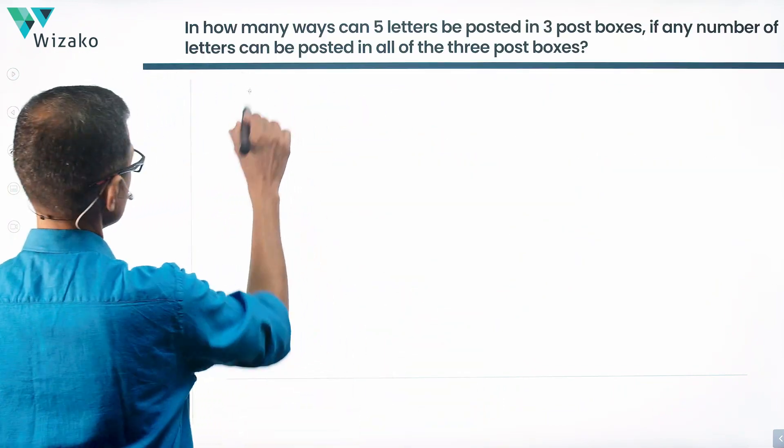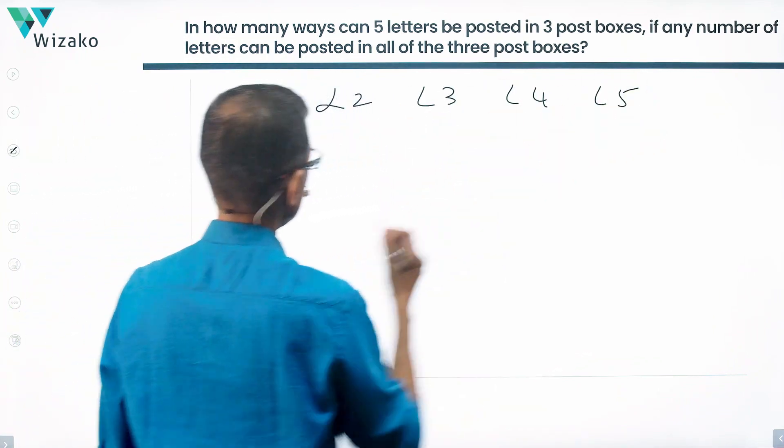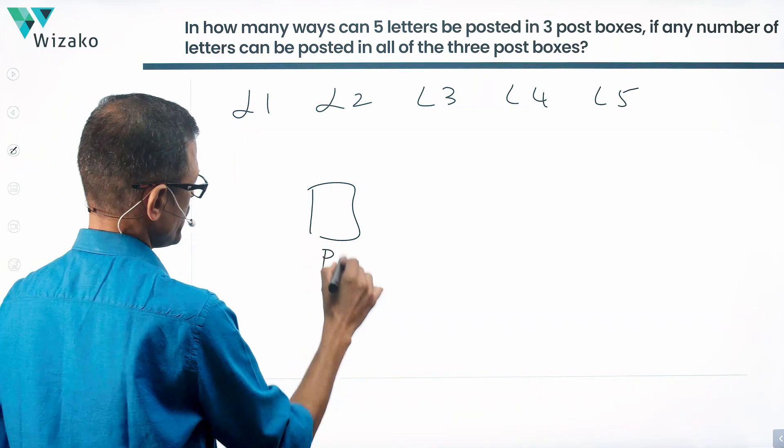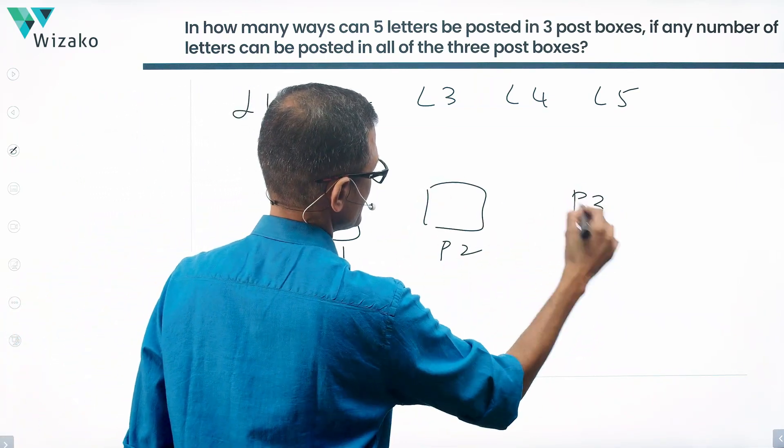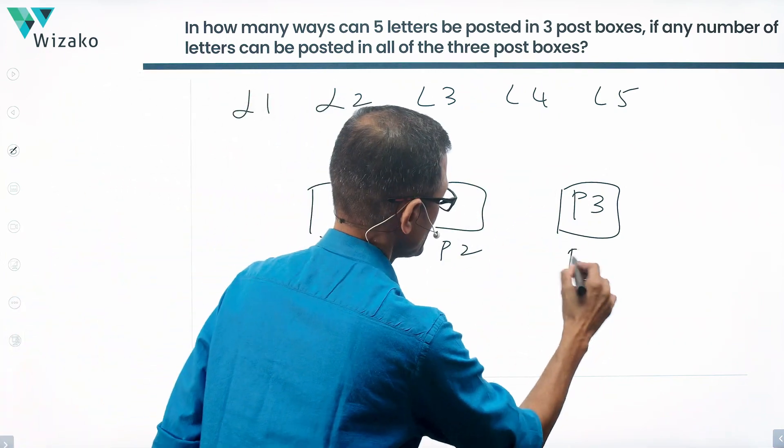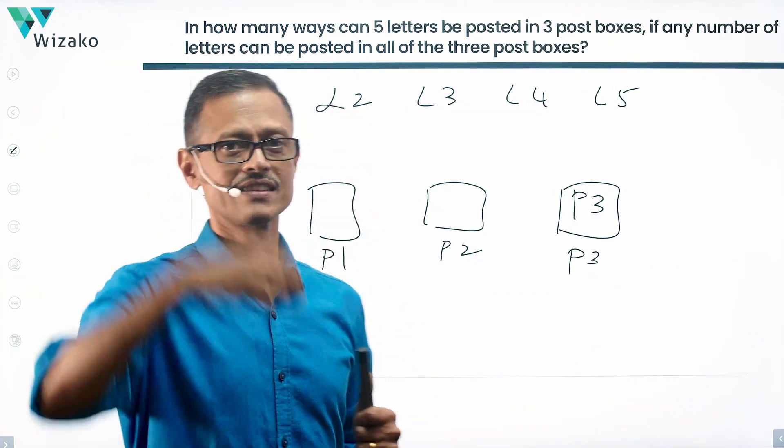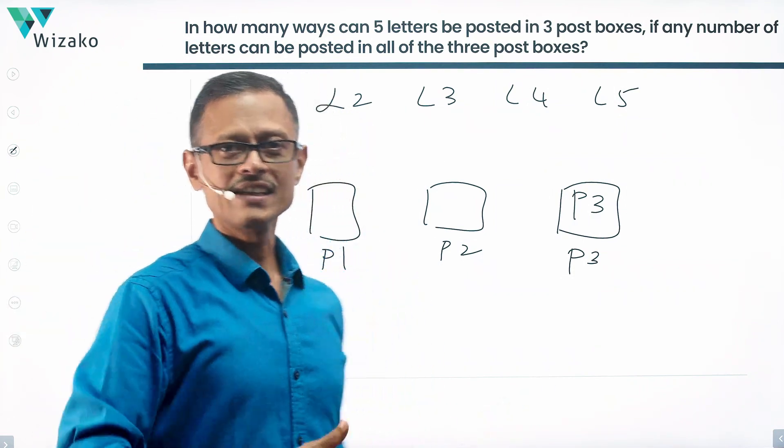Let's name these letters as L1, L2, L3, L4, L5. Let's call these boxes as P1, P2, P3. I've got five letters, I've got three boxes. It says that you can post any number of letters. You can post all of these five letters in any of these boxes. So let's get started.